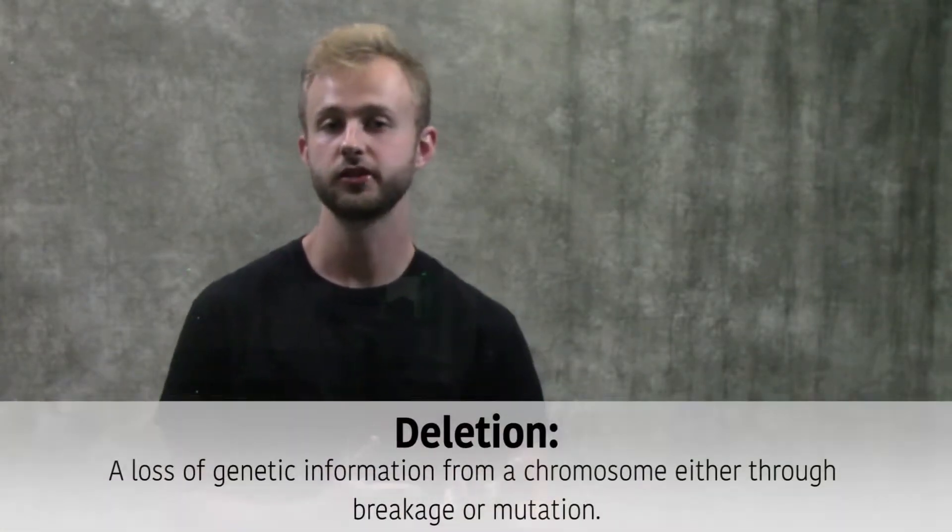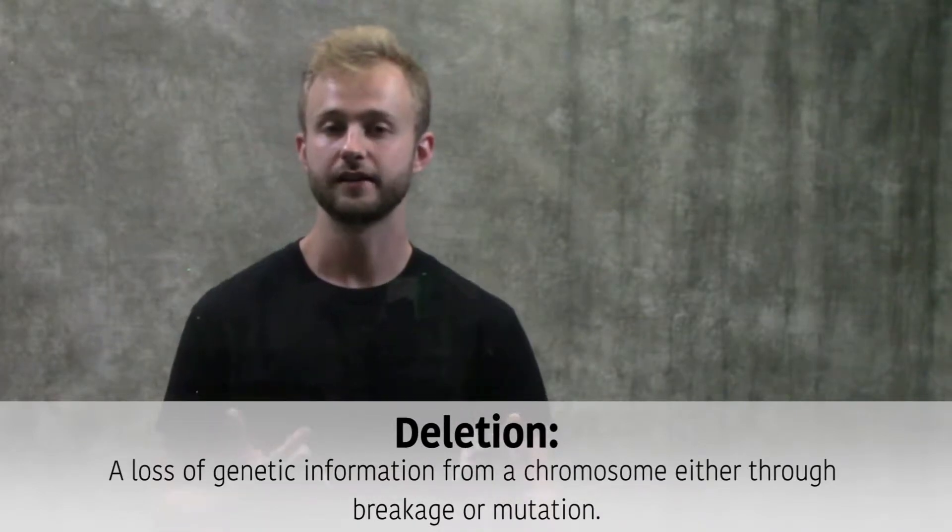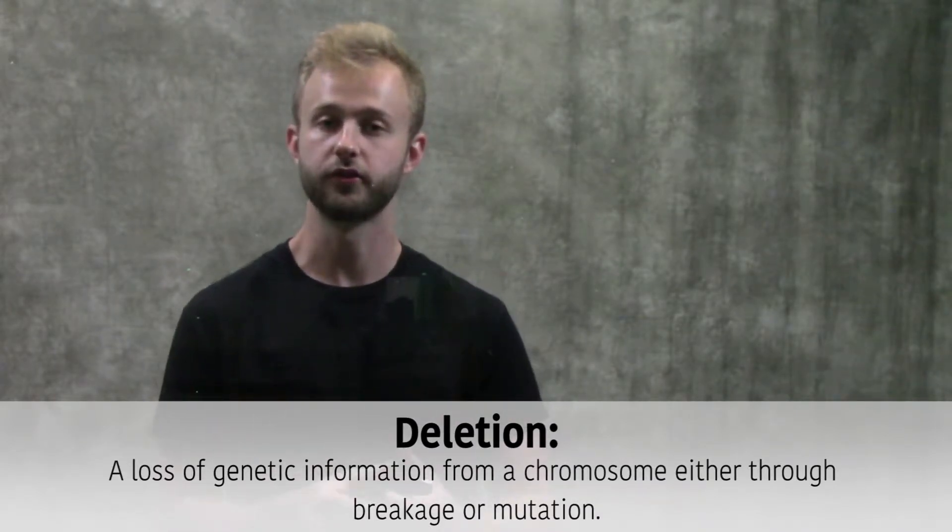The first one we're going to look at is a deletion. Deletion is just as it sounds - that's going to happen when a portion of a chromosome is deleted. This can happen during crossing over if the two chromosomes that are exchanging information don't exchange equal sized pieces of DNA.